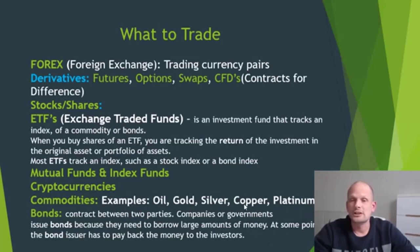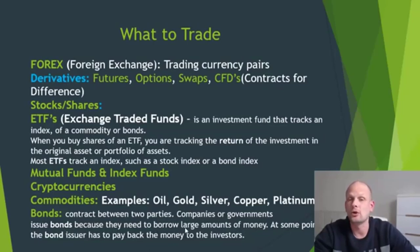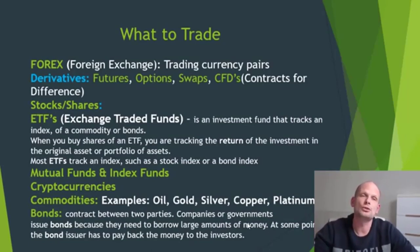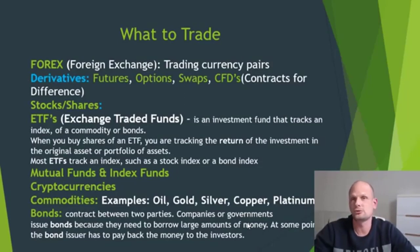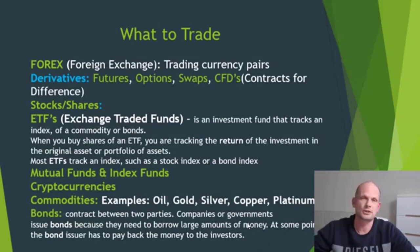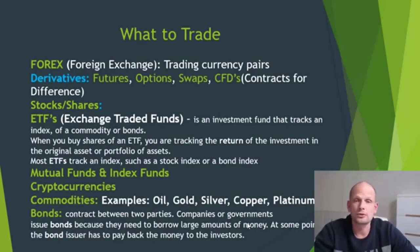Next we move to commodities. Examples of commodities are oil, gold, silver, copper, and platinum — and you can trade all of these. Then we have bonds, which are contracts between two parties. Companies or governments issue bonds because they need to borrow large amounts of money. For example, China owns a lot of US bonds. When a government issues bonds, they collect money from people and promise to buy those bonds back after some period of time at a higher price. Bond holders may also receive dividends, paid once, twice, or three times a year.